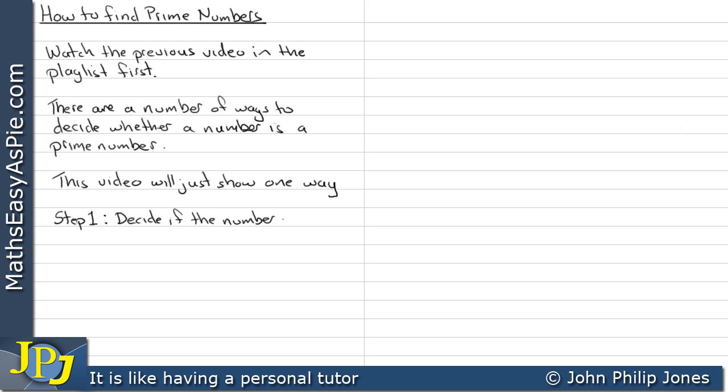Step 1. Decide if the number is potentially a prime, i.e. does it end with either 1, 3, 7 or 9.